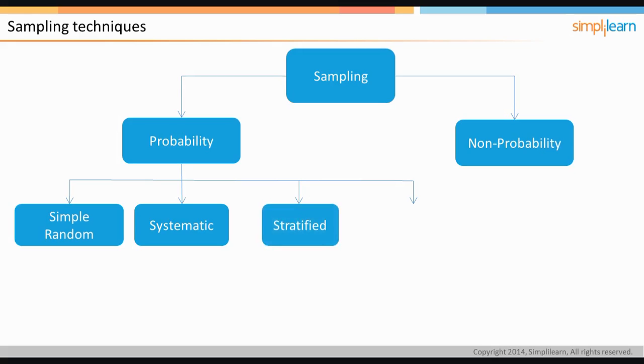Then we have stratified sampling. It is the process of dividing the members of the population into homogeneous subgroups, or strata, before sampling.